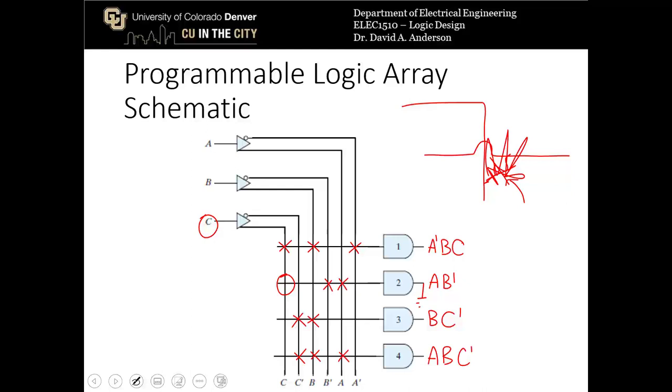So the way that these programmable logic arrays are made is that a manufacturer will produce all of this functionality with fuses between all of these connections, and then it's up to the designer to decide which fuses they actually want to keep and which ones they want to destroy and create open circuits for.